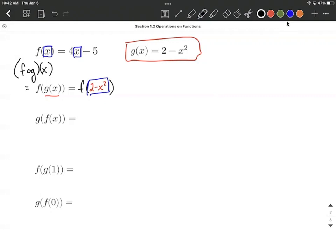So from that, we're going to get 4 times whatever replaced our x. In this case, it's going to be that 2 minus x squared and then the minus 5 from the original definition from f of x.